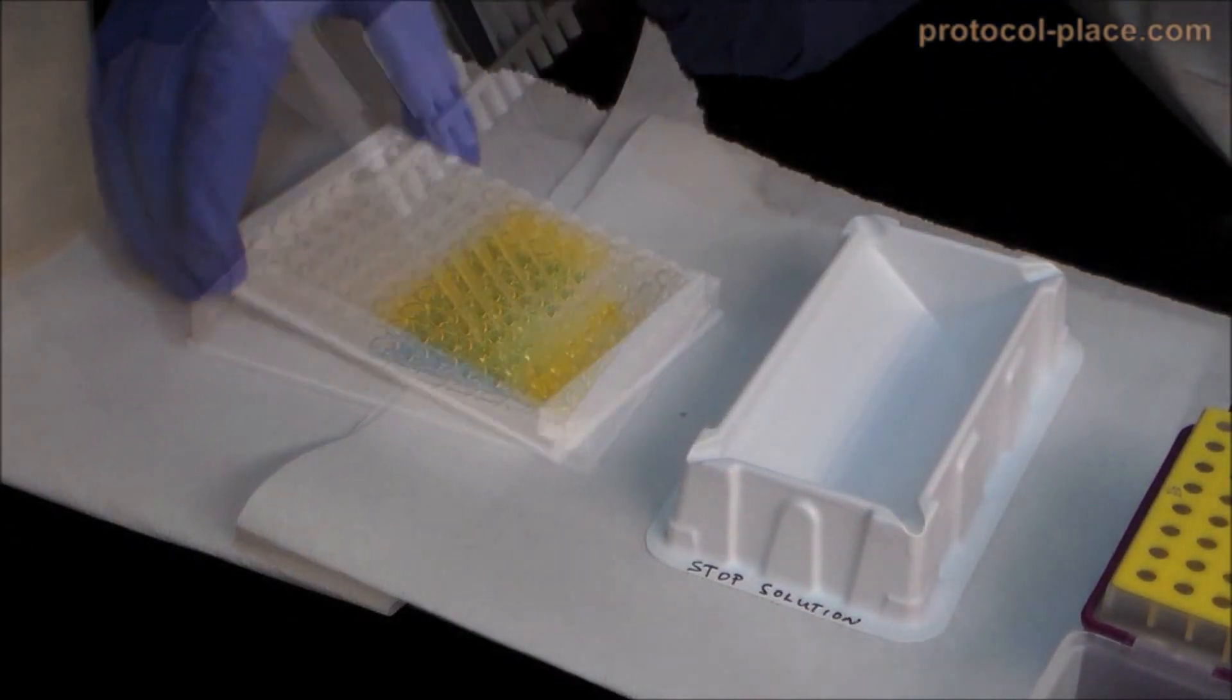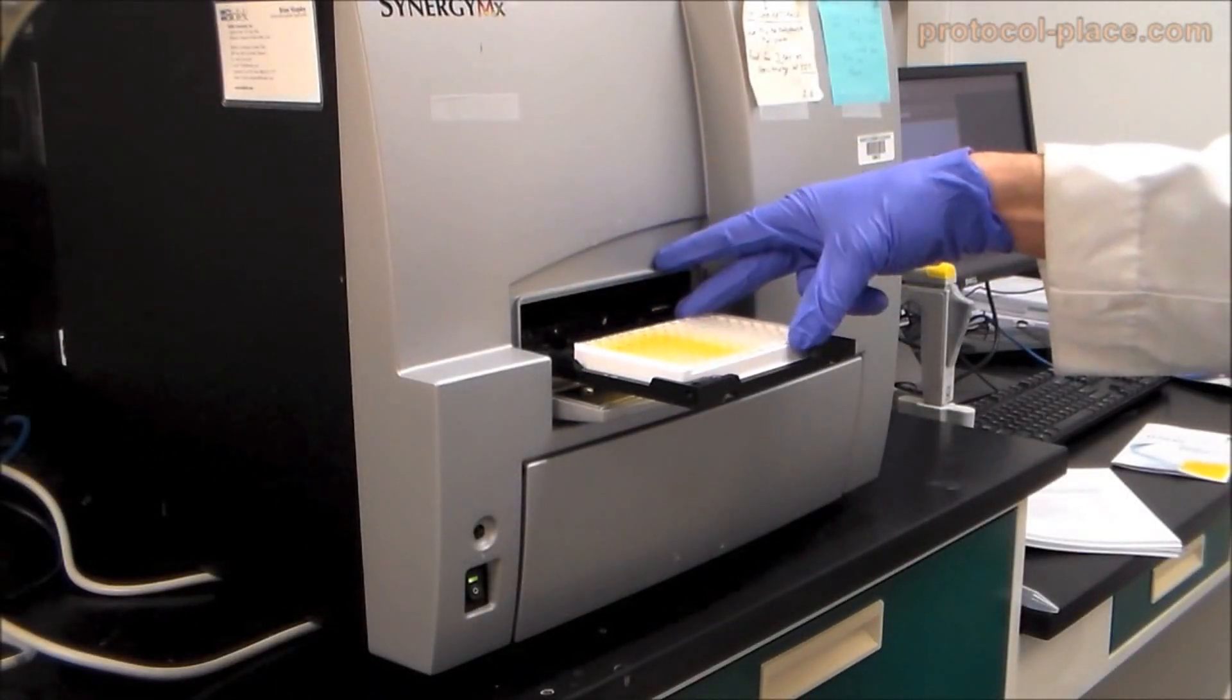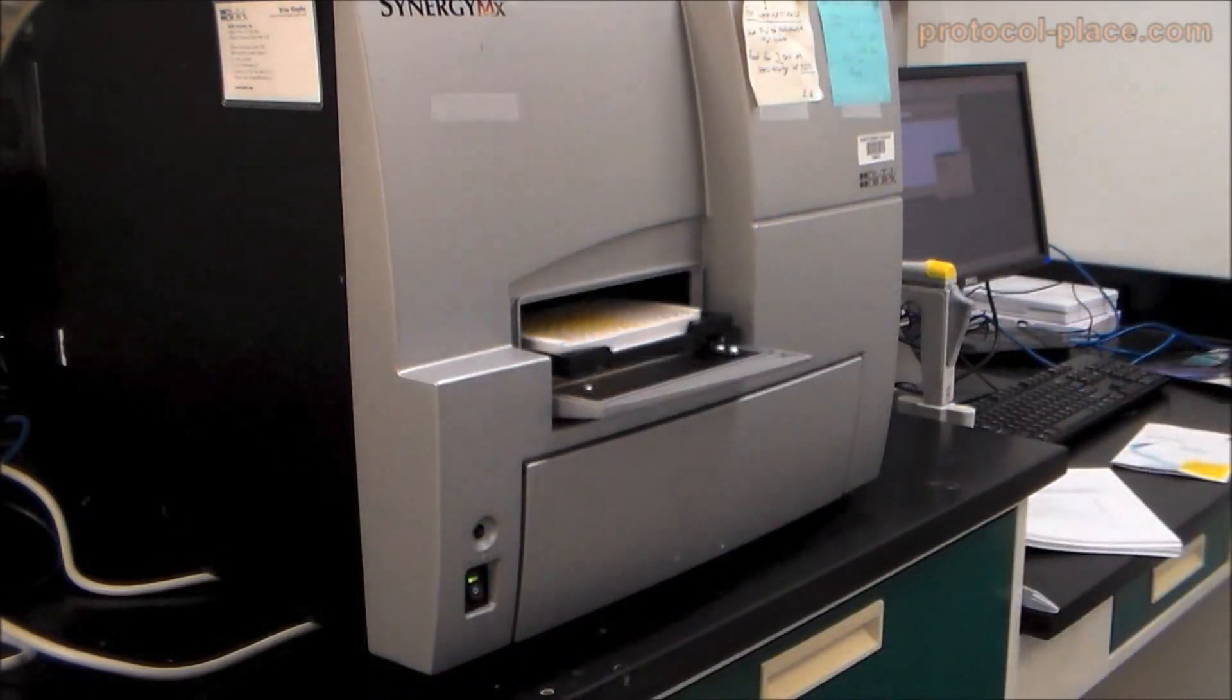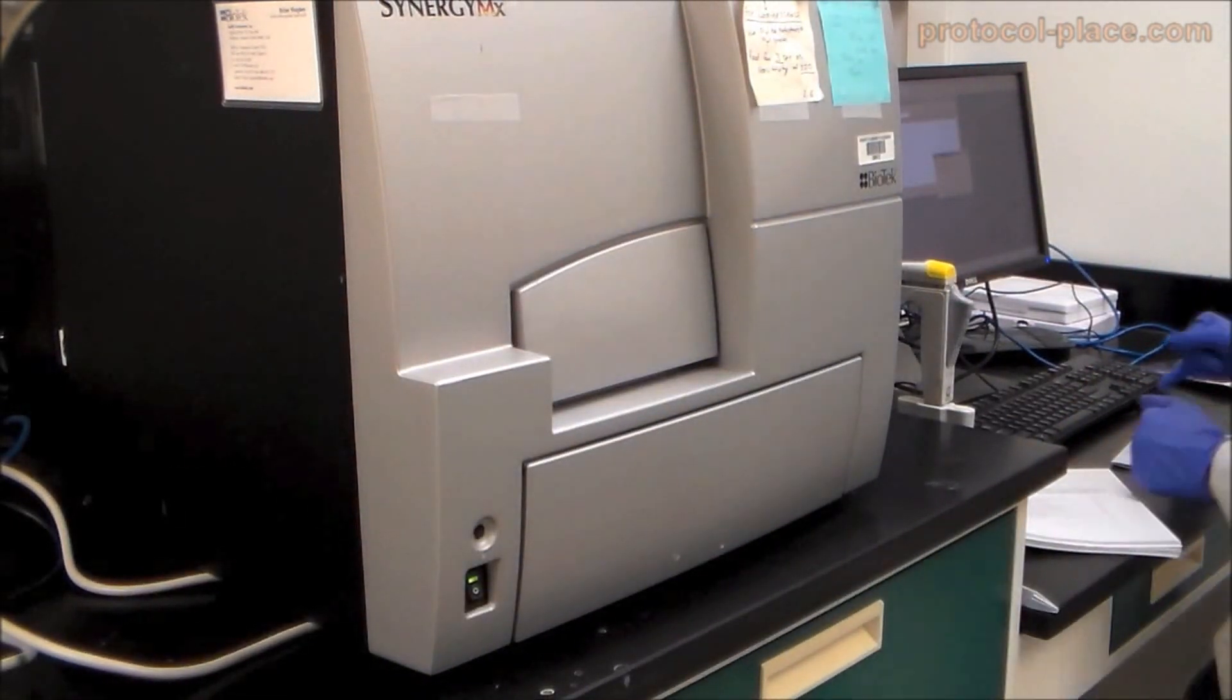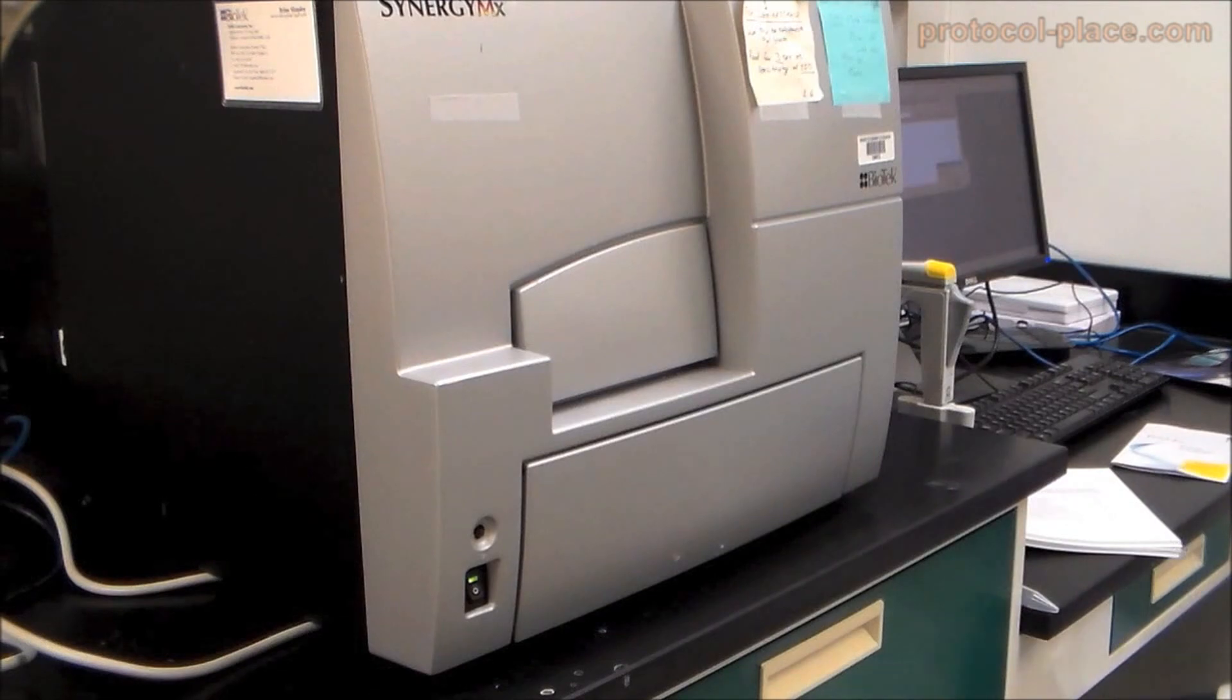After the stop solution has been added, the ELISA plate can immediately be assessed in a plate reader for absorbance as directed by the manufacturer. Most protocols call for measuring absorbance at 450 nm.